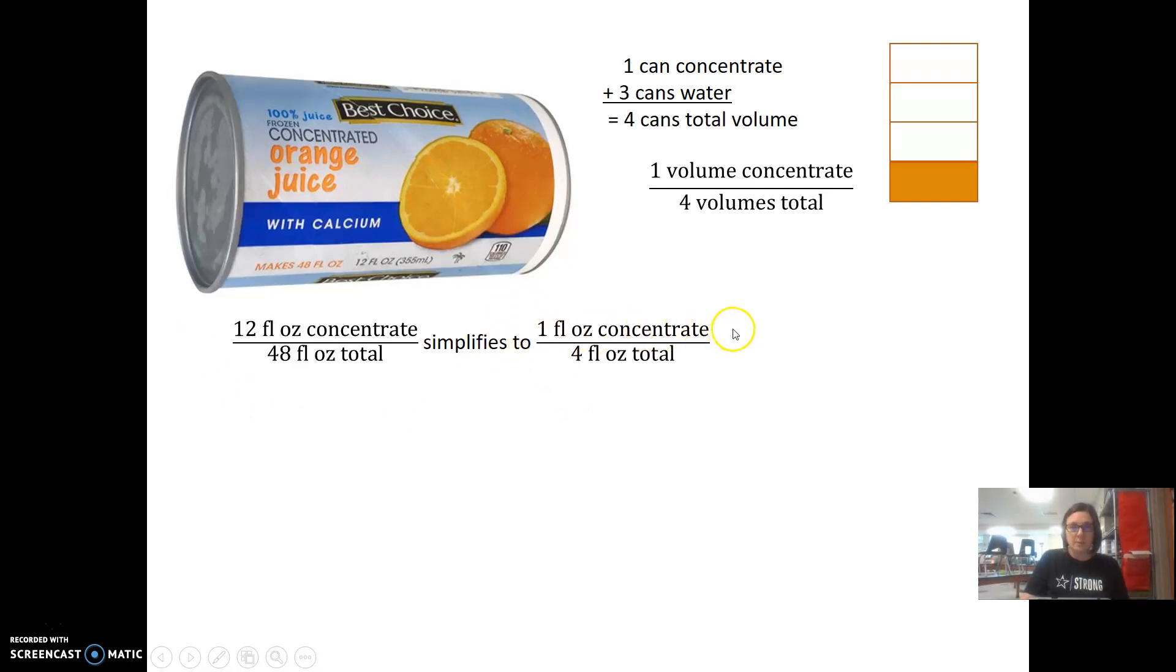For every one fluid ounce of concentrate, you'll have four fluid ounces total. In molecular biology, we would refer to that as a four times concentrate or 4X concentrate. And our label on the container would actually say that out front, that this would be four times or 4X concentrated orange juice.